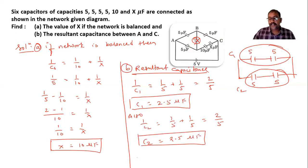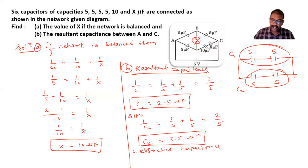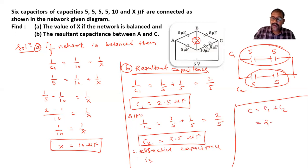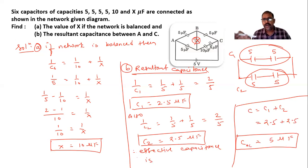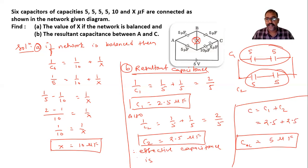Since C1 and C2 are connected in parallel, the effective capacitance C = C1 + C2 = 2.5 + 2.5 = 5 microfarad. This is the effective capacitance between terminals A and C. Note that if a network is balanced and all capacitances are the same — five, five, five, five — the resultant capacitance comes out to be that same value.